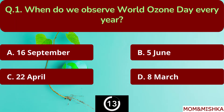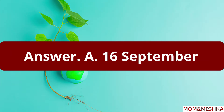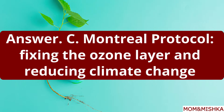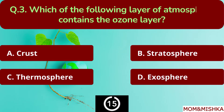When do we observe World Ozone Day every year? The answer is option A: 16 September. What is the theme of World Ozone Day 2023? It's the Montreal Protocol: fixing the ozone layer and reducing climate change. Option C.